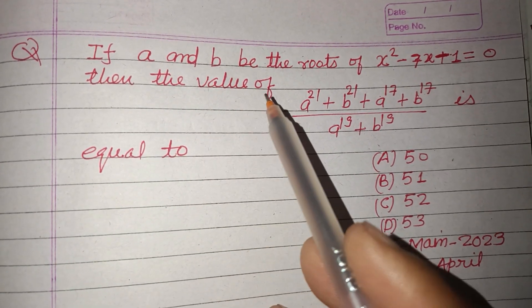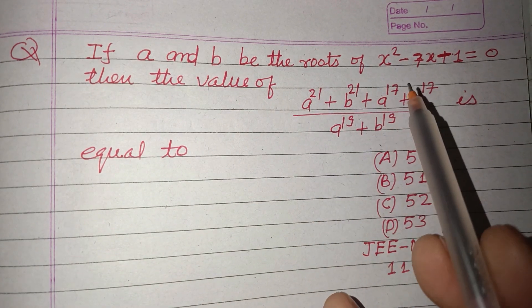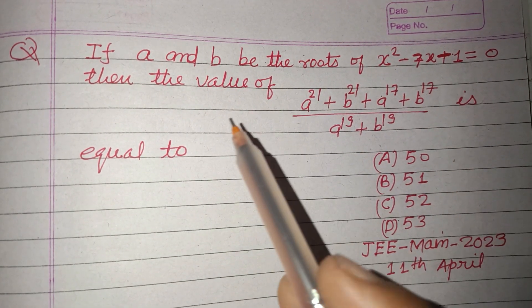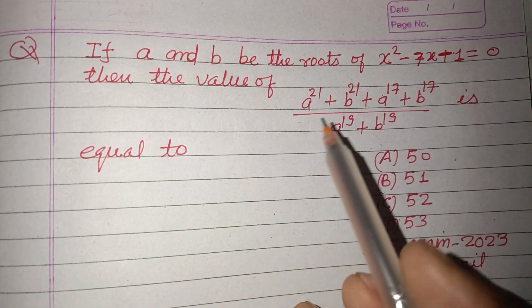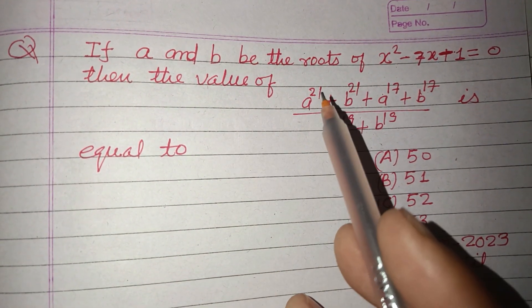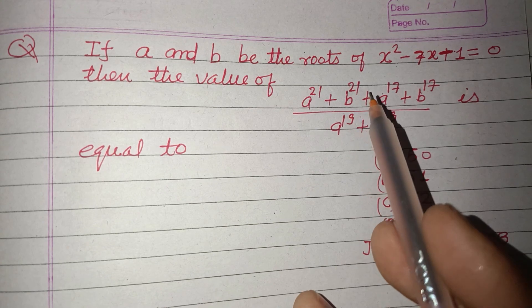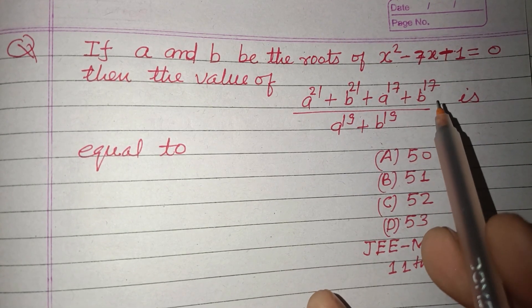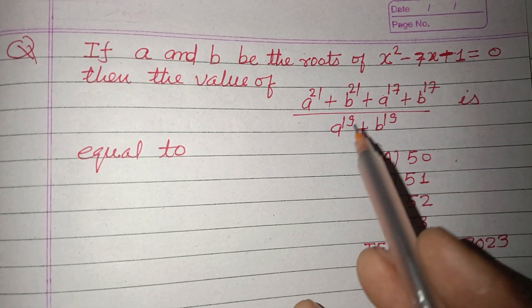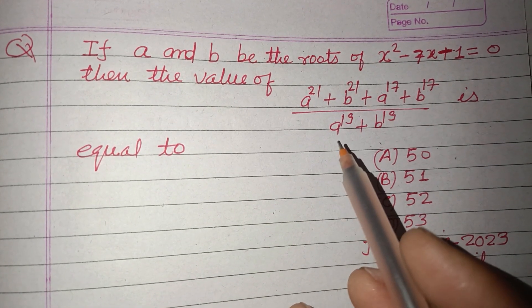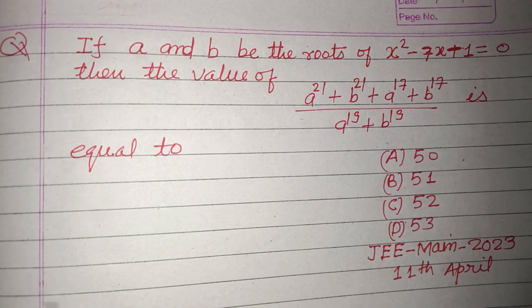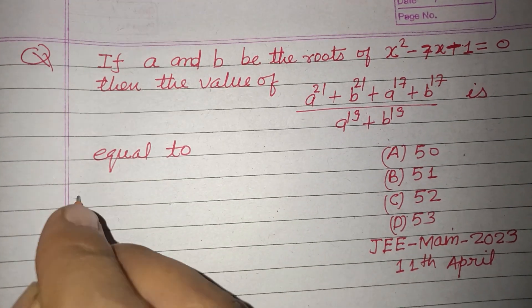If a and b are the roots of x² - 7x - 1 = 0, then find the value of (a²¹ + b²¹ + a¹⁷ + b¹⁷) divided by (a¹⁹ + b¹⁹).